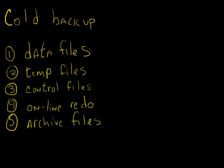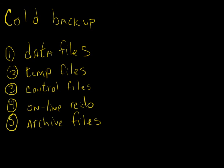Data files should be pretty self-explanatory — those are the files that make up your instance. Temporary files are data files associated with temporary tablespaces and are important to back up also. A control file is a really small file that maintains the physical structure of your database. If you lose your control file you can rebuild it, but it's a pain. It's such a small file that it's a no-brainer to back up the control files. Online redo logs are also usually very small compared to your data files, so it's always a good idea to back those up too.